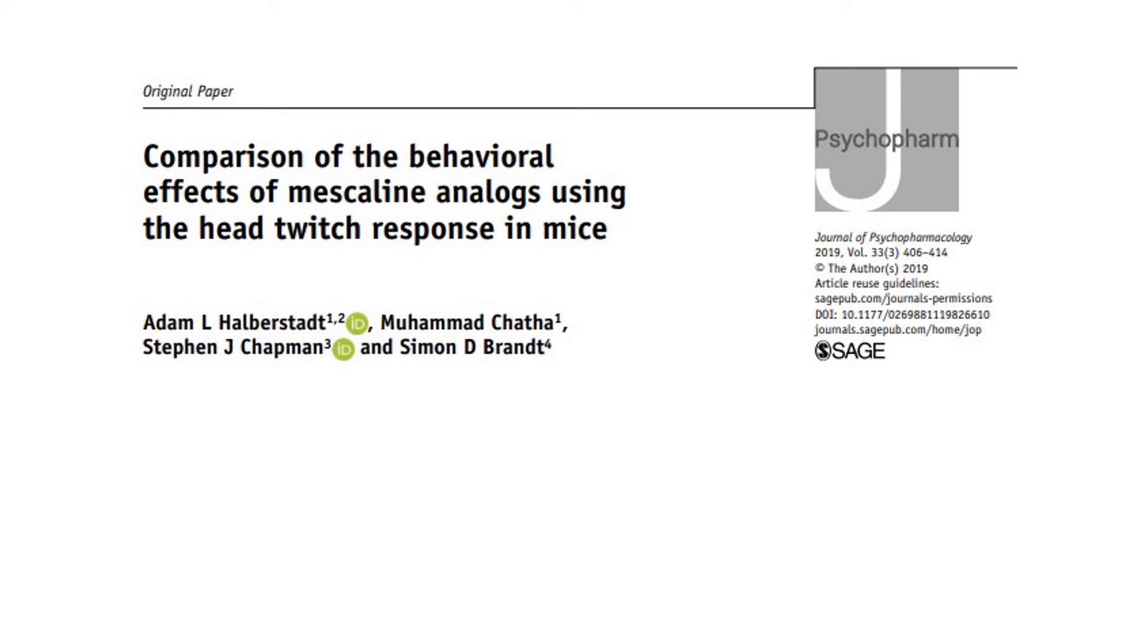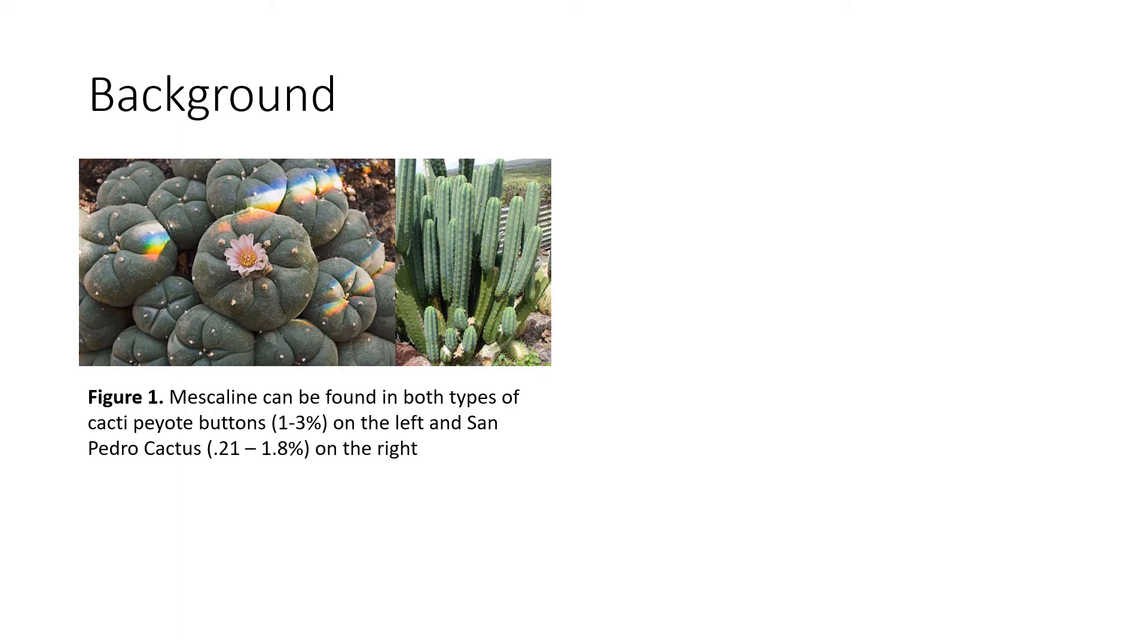This publication is titled Comparison of the Behavioral Effects of Mescaline Analogs Using the Head Twitch Response in Mice. Mescaline can be found in nature in two types of cacti.